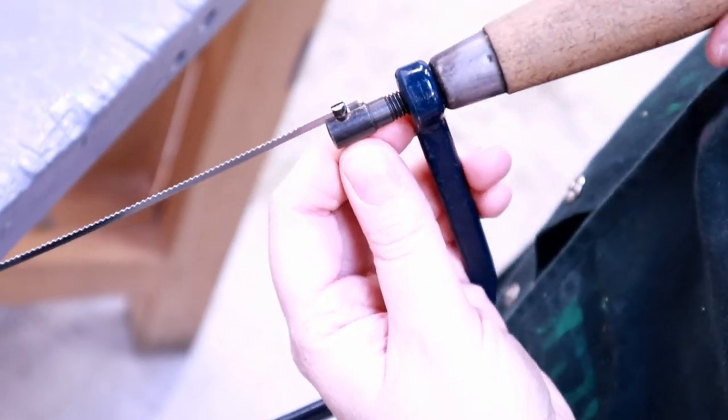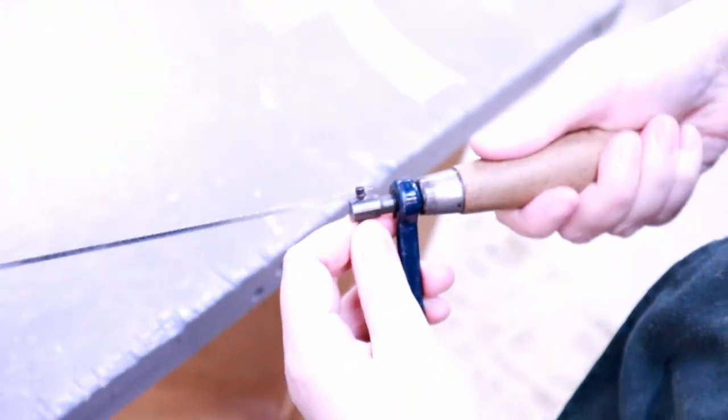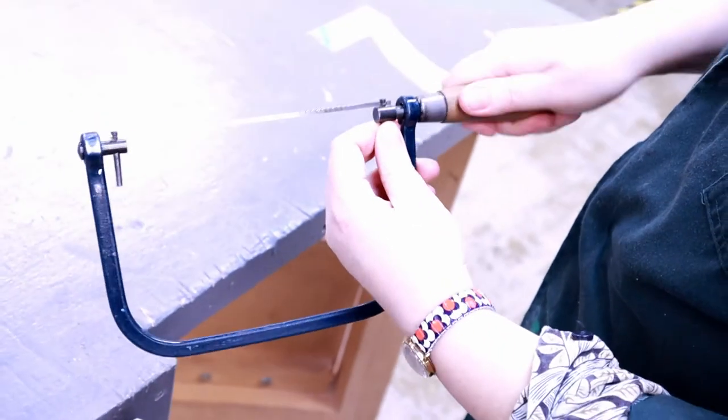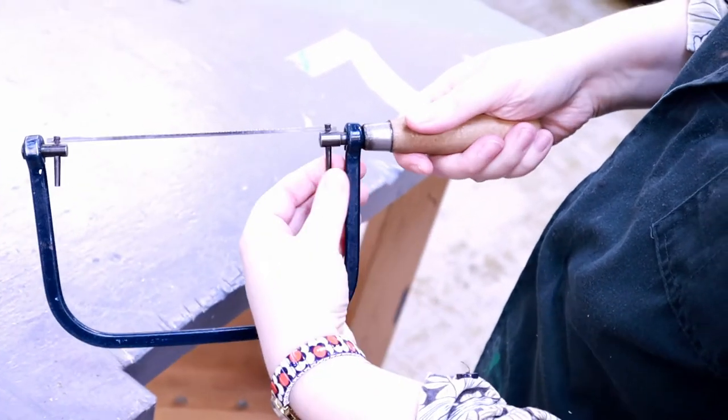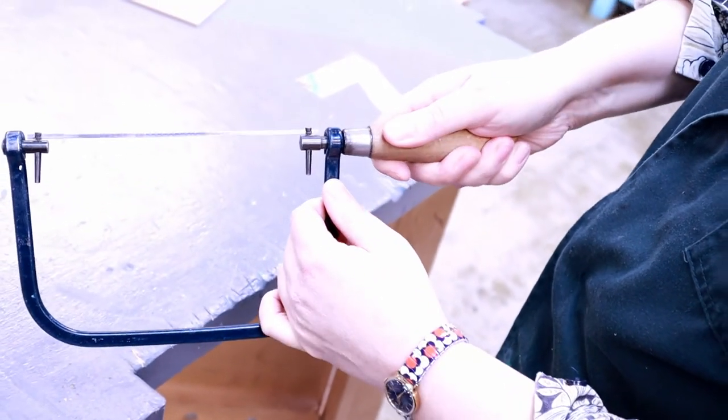Then you need to hold on to the pin and tighten up the handle. If you were to let go of that pin, you'll notice that the blade will start to twist around, which you don't want to do.